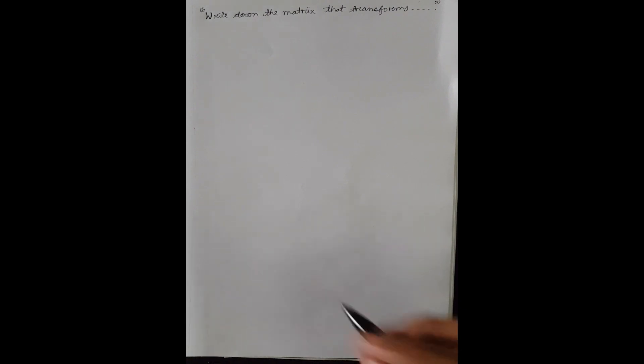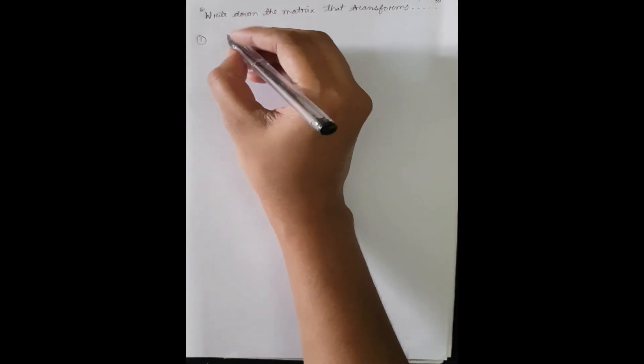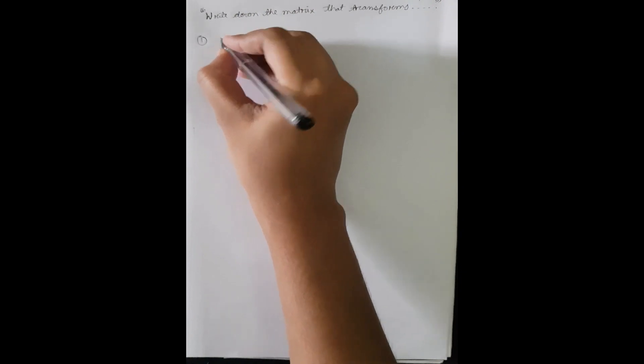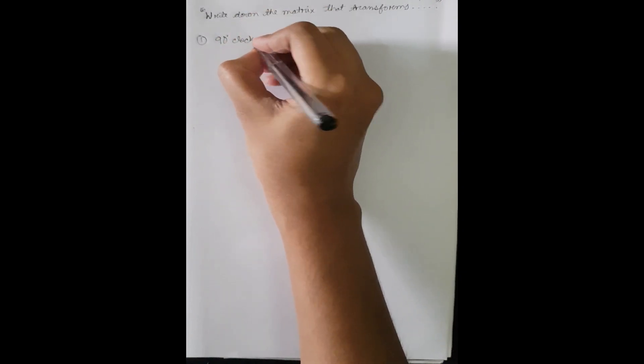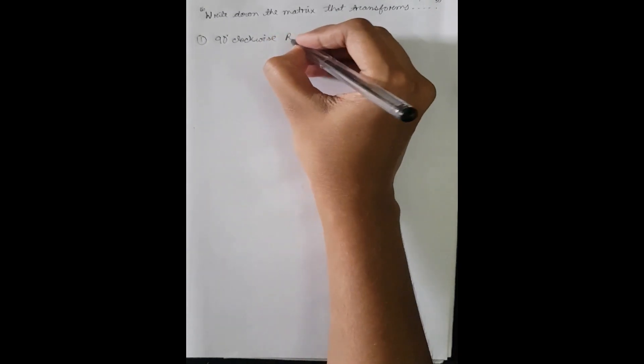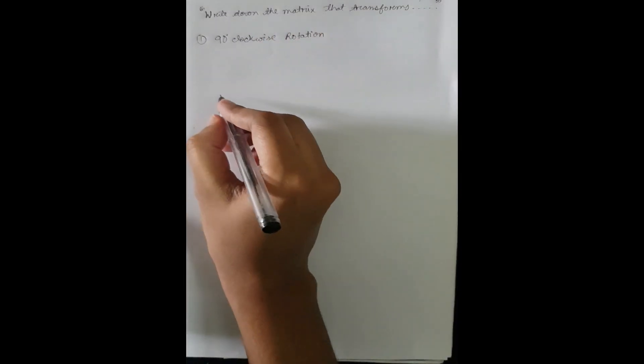In many questions they ask you to write down the exact matrix that will transform a triangle into another one. It's quite difficult to memorize the matrix for all the transformations, so first we will see how to find the matrix that will convert a triangle into another one by a 90 degree clockwise rotation.